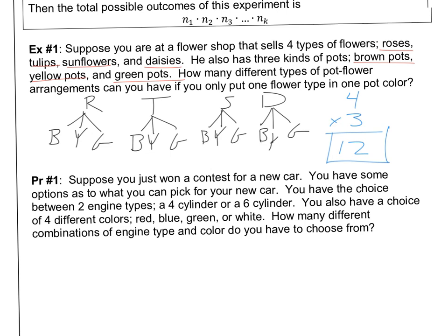Practice one: Suppose you just won a contest for a new car. You have the choice between two engine types — a four-cylinder or a six-cylinder — and a choice of four different colors: red, blue, green, or white. How many different combinations of engine type and color do you have to choose from? Go ahead and give it a try and check back when you're ready.